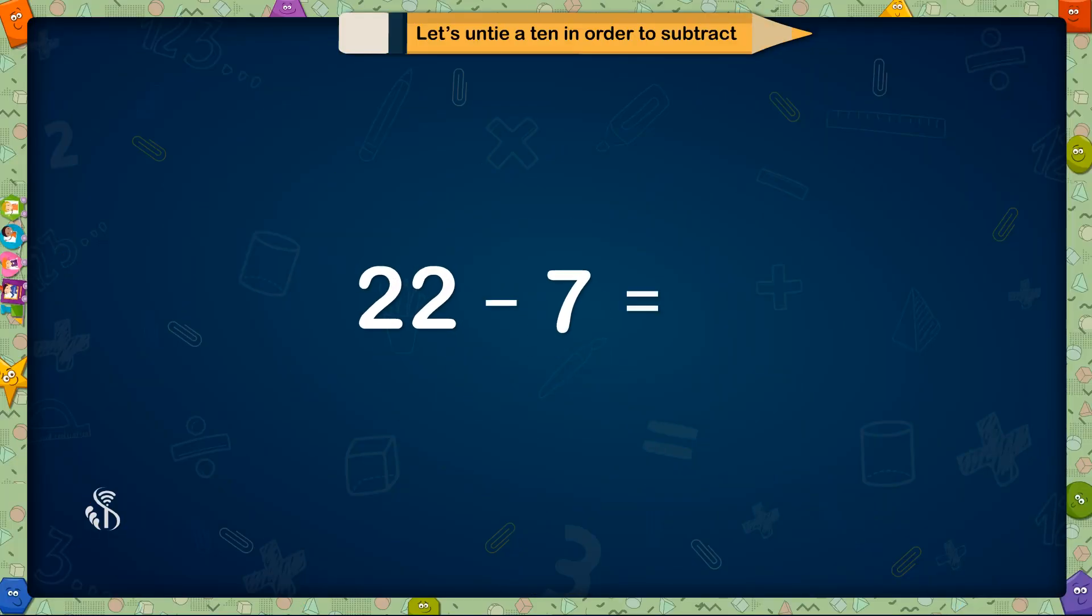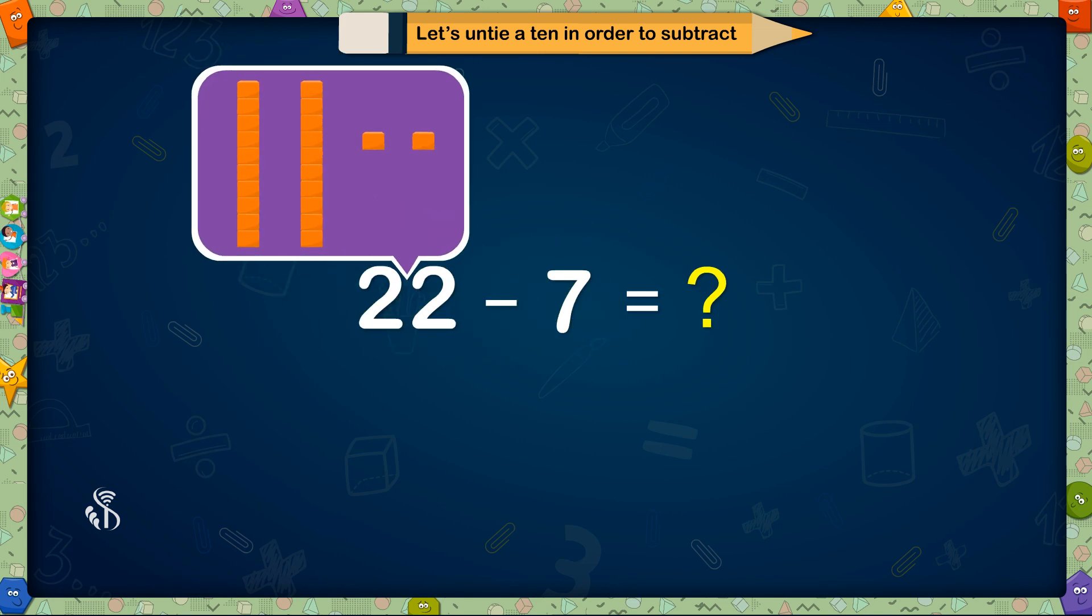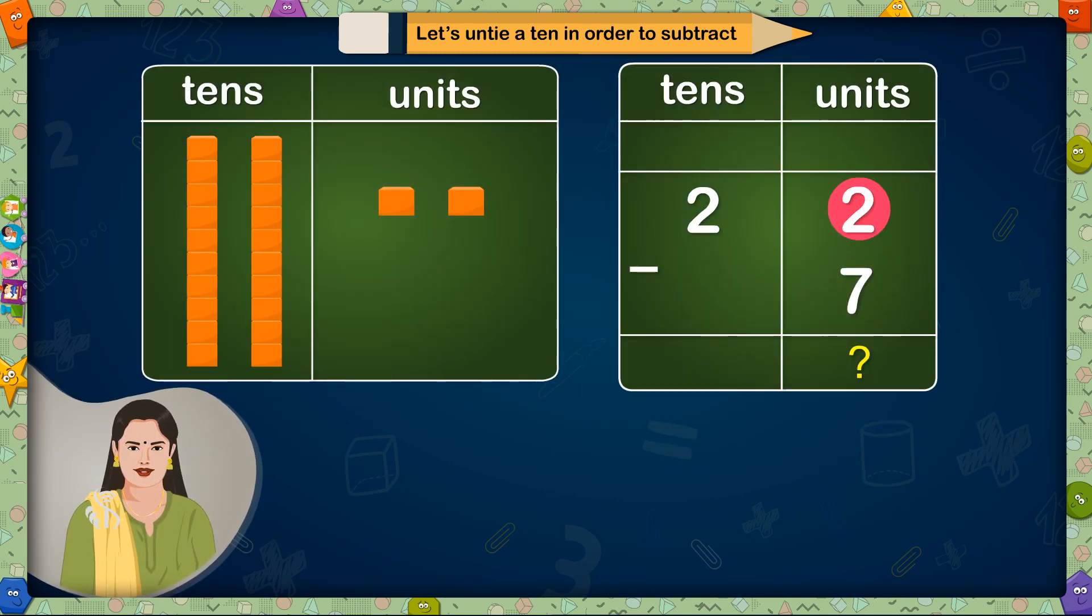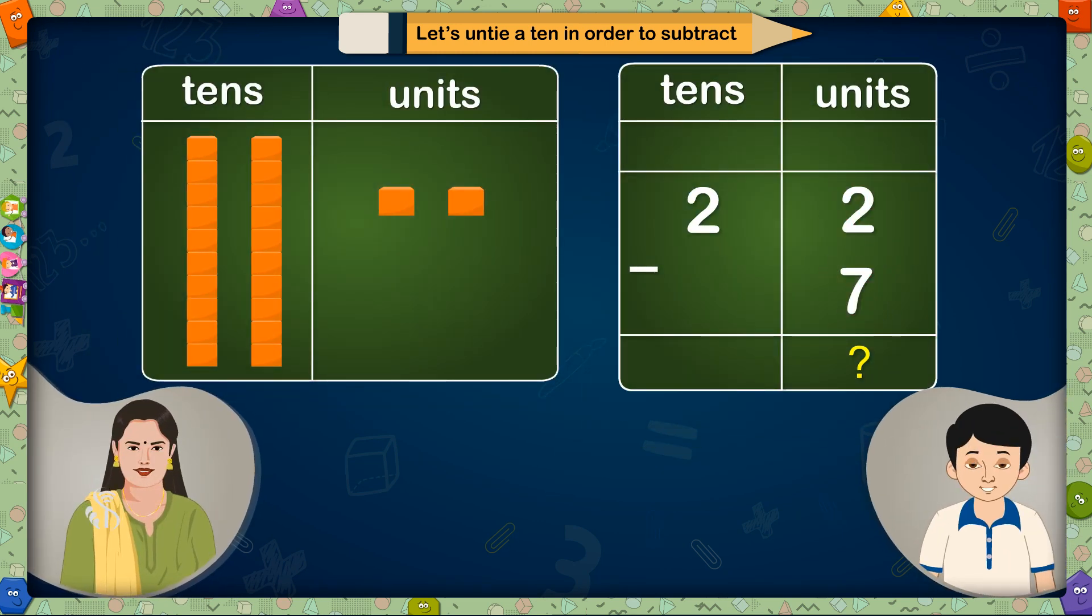Example 1: 22 minus 7 equals. Here we have to subtract 7 from 22. There are 2 tens and 2 units in 22. Can we reduce 7 units from 2 units? No madam! Then what do we have to do now?